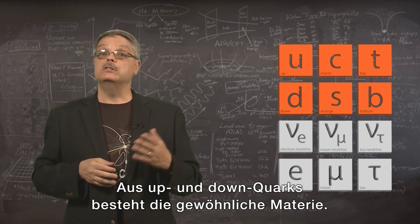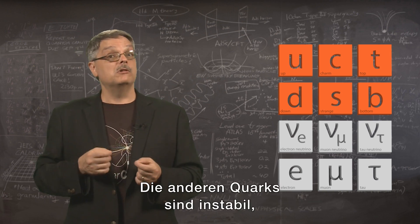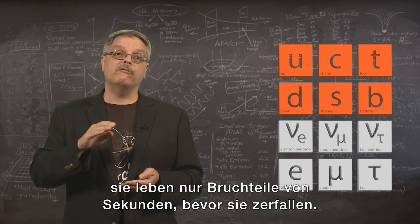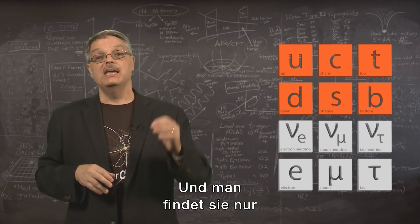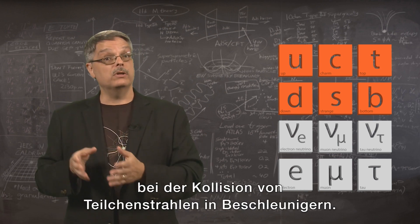The up and down quarks are found in ordinary matter, but the others are unstable, existing for only short fractions of a second before decaying, and found only inside particle accelerator collisions.